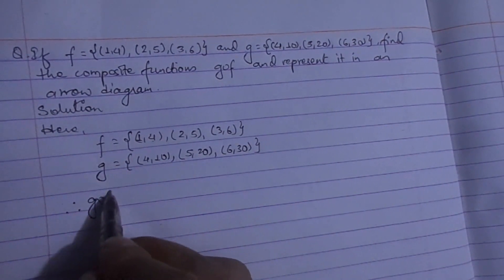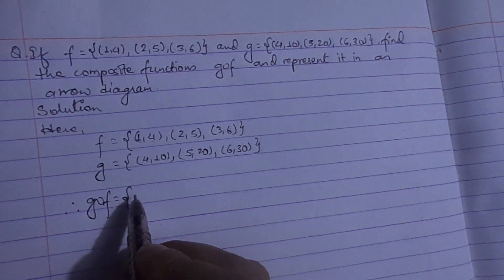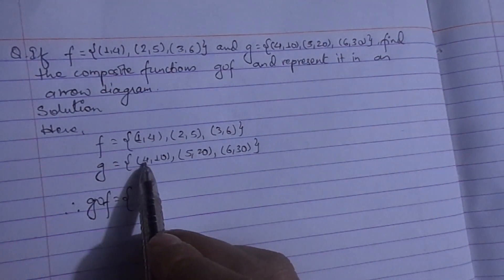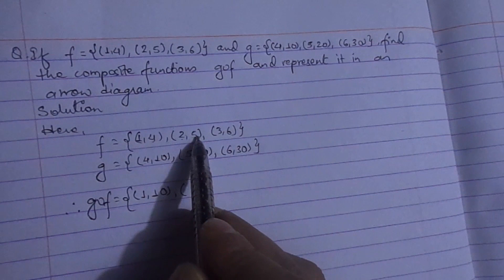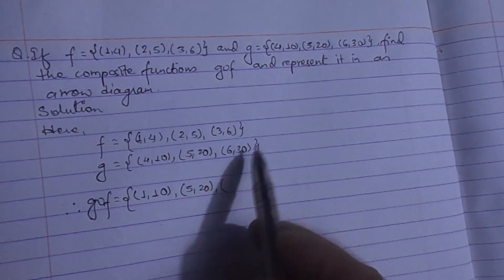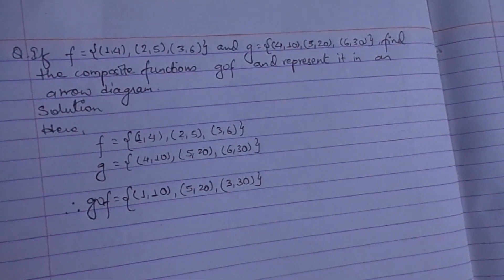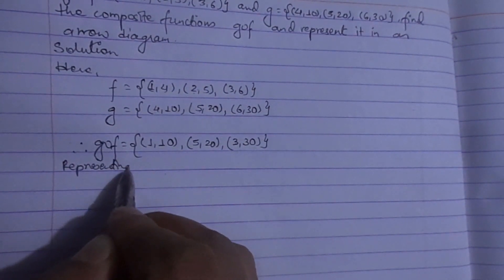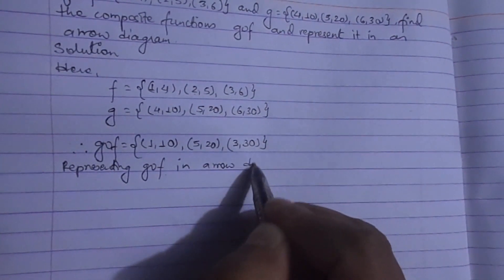Directly I'm going to find gof. gof means first function f is operated and it is followed by g. It means 1 maps to 4 and 4 maps to 10, so 1 is directly linked with 10. Similarly, 2 maps to 5 and 5 maps to 20. Next, 3 maps to 6 and 6 maps to 30, so 3 maps to 30. This is the required composite function. Now representing gof in an arrow diagram.